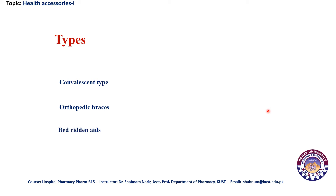Bedridden aids are items that help patients while on the bed — to get up, sit, and get out of bed, and sometimes to take medication properly without spillage, or to keep their body in certain positions while on the bed. Examples include over-bed tables, over-bed trays, cushions, and mattresses.